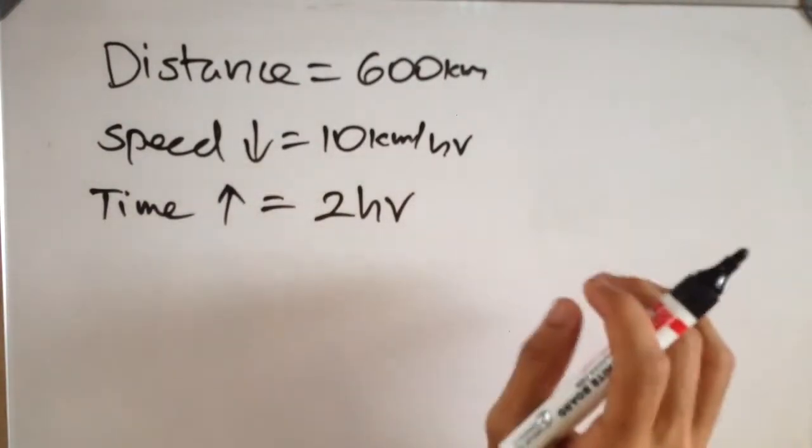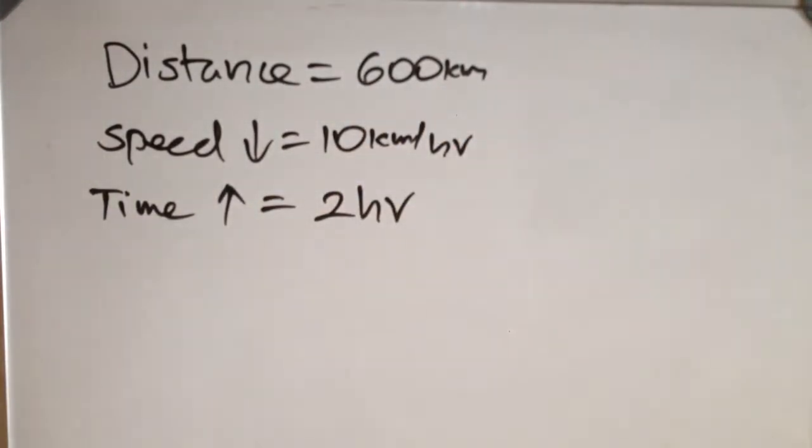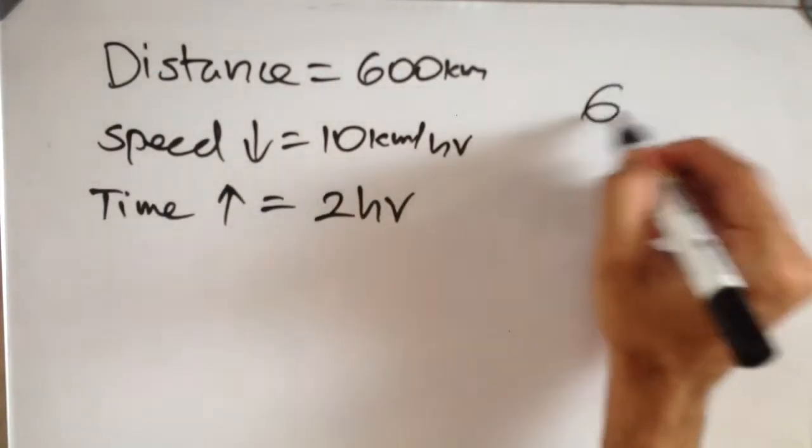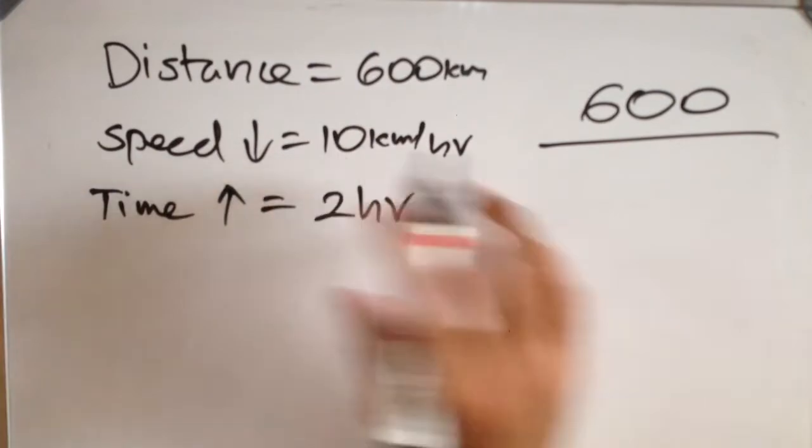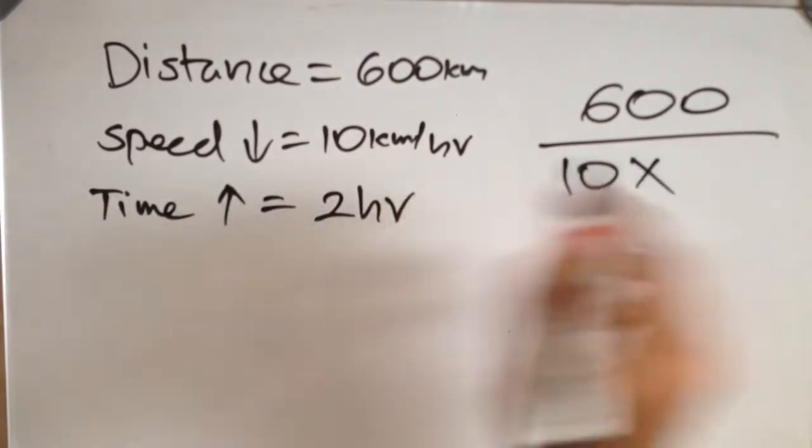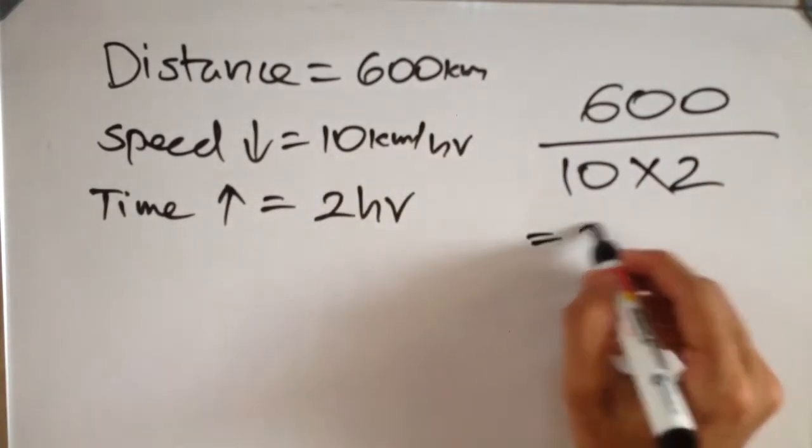We are going to divide this value with the product of these two values. So we have 600 divided by 10 into 2, so 20, that would be 30.